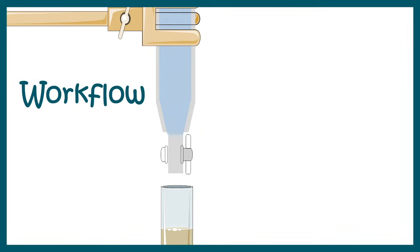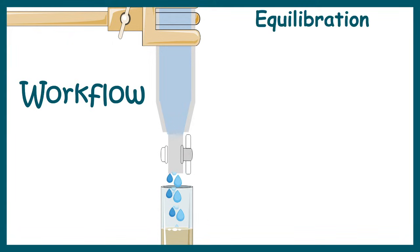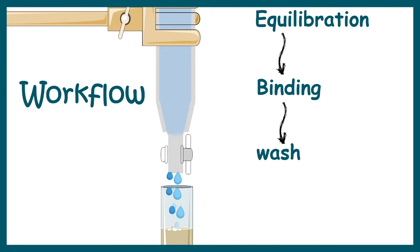Just like any other chromatographic technique, HPLC also works on the same general principle. In column chromatography, which we have seen earlier — a link to those videos is available — the principle starts with equilibration, where the column is equilibrated with buffer, followed by sample binding, then wash, and ultimately elution.